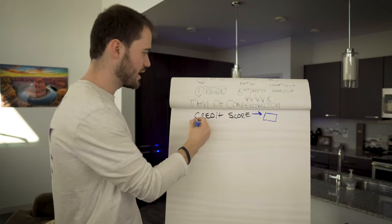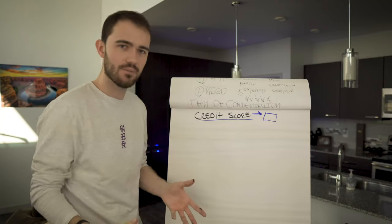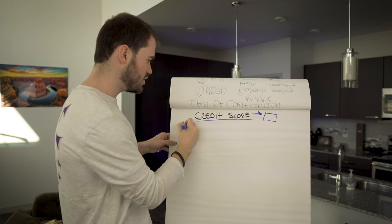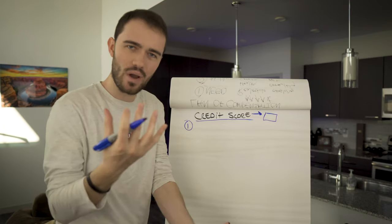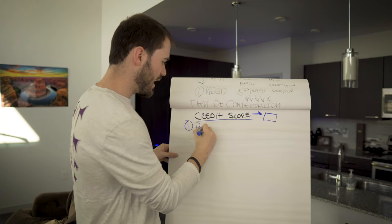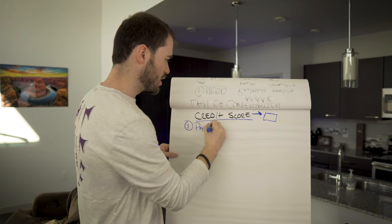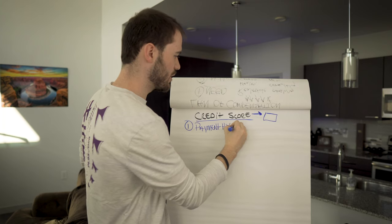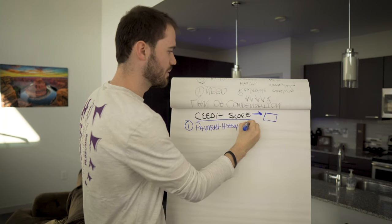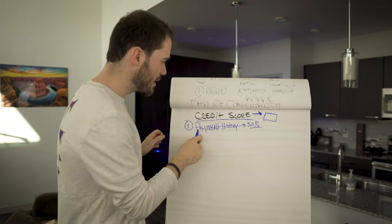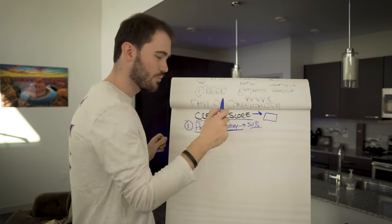So first things first, we need to talk about how a credit score is created. Credit scores are created through a few different elements and each element has different weights of importance. I'll talk about that as well. But number one, obviously as you can imagine, your payment history is the most important component. When it comes, it takes up around 30% of your credit score. Your payment history is extremely important.